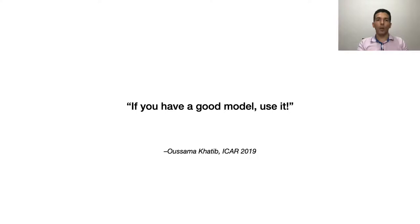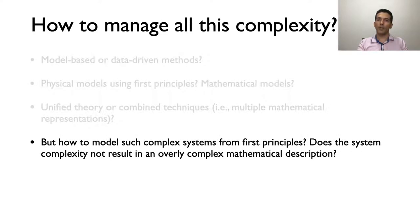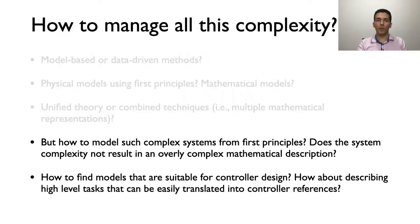Although it is not clear if all problems in robotics can be well defined mathematically — this is something for philosophers to discuss — at least several important robotics problems can. But even if a given problem can be represented mathematically, is it feasible to do so? Does the system complexity not result in an overly complex mathematical description that alienates practitioners? How do we find models suitable for controller design? How about describing high-level tasks that can be easily translated into low-level controller references? How to interface with other techniques that are not so reliant on mathematical descriptions? I will present our recent efforts in addressing some of those challenges.